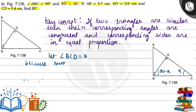Because the sum of angles of a triangle is equal to 180 degrees. So if this angle is X and one angle is 90 degrees, then the remaining angle will be 90 minus X.